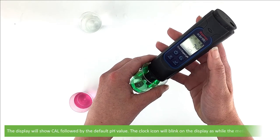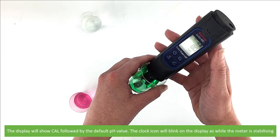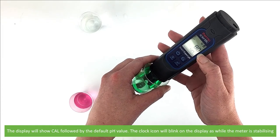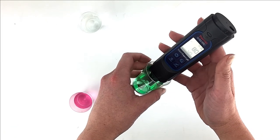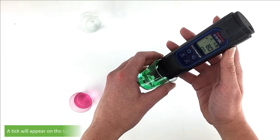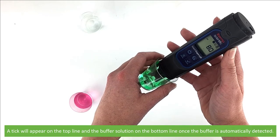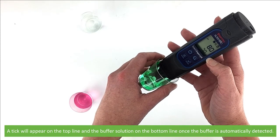The display will show CAL followed by the default pH value. The clock icon will blink on the display while the meter is stabilizing. A tick will appear on the top line and the buffer solution on the bottom line when the buffer is automatically detected.